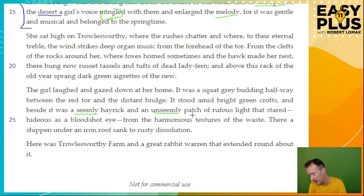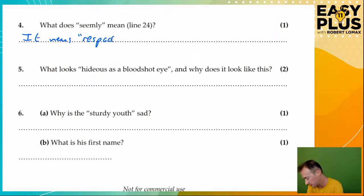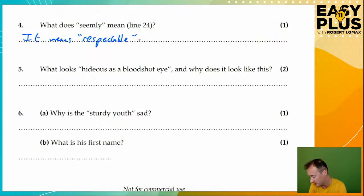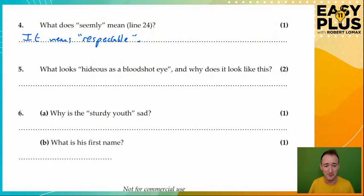Since the question doesn't say 'write down,' in theory you should write a sentence: 'It means respectable.' Anything like respectable, elegant, neat, tidy, well-presented, decorative should be okay for the mark here. 'Unseemly' would mean inappropriate — a bit rude, not what you want on this kind of occasion: 'He walked into the party and made an unseemly display of himself.' You can imagine that kind of conversation with the word 'unseemly' being used.